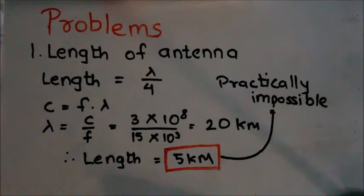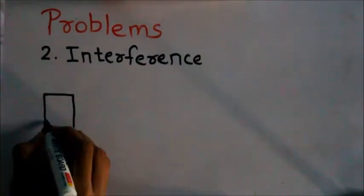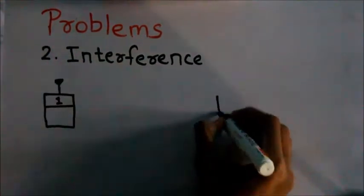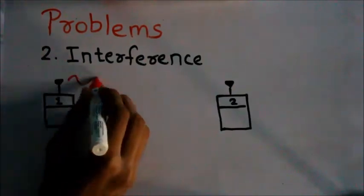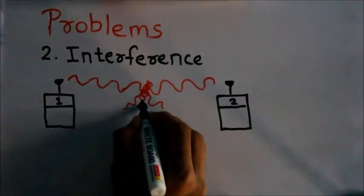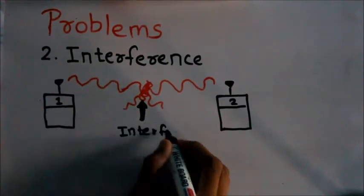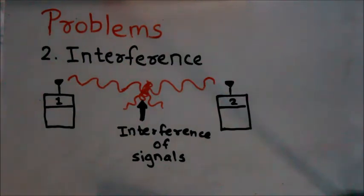The second problem is interference. In a city there will be two or more radio stations, and if these stations directly transmit these low frequency signals, they will interfere with each other. We can visualize it as two or more people simultaneously speaking in a room - you won't be able to clearly hear any one of them because the sound waves will mix with each other and ruin the information.